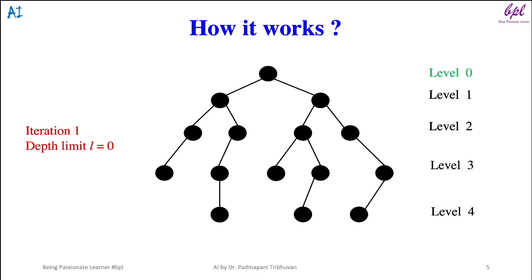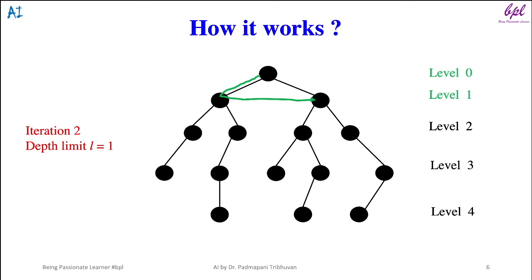To understand the working of the algorithm, consider the tree shown on the slide. In the first iteration, depth limit L is zero. The algorithm starts with the initial node and considers it has no successors. If it is not a goal state, increase the value of L by one and the second iteration will start. In the second iteration, depth limit L will be one and nodes will be explored in that sequence.